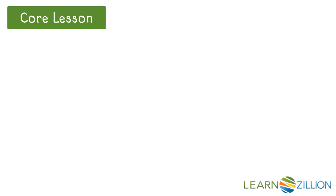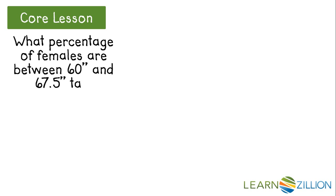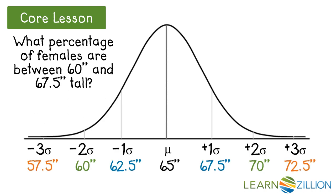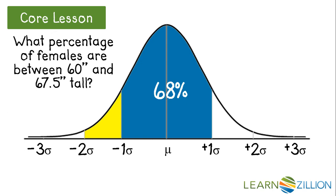Let's apply these tips to another example. What percentage of females are between 60 inches tall and 67.5 inches tall? Bringing back our normal distribution of female heights, we need to find the percentage from 2 standard deviations below the mean to 1 standard deviation above the mean. The portion up to 1 standard deviation above the mean is captured in the 68% from the empirical rule, since 68% of our data falls closest to the mean.